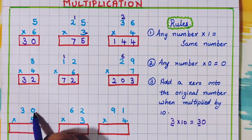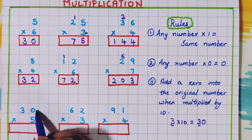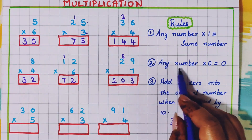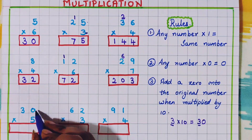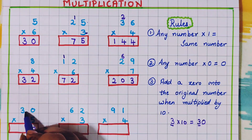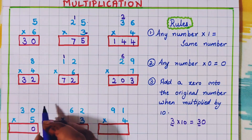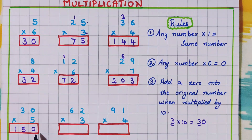Next one: 30 into 5. Let's start. 5 0s are — any number into 0 is 0, so 5 0s are 0 here. Next, 5 3s are 15; so here I will write 15. So the answer is 150.